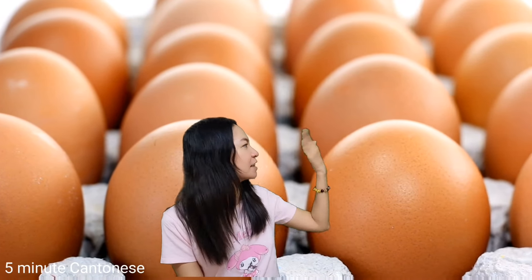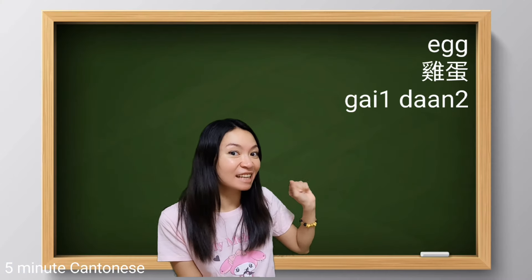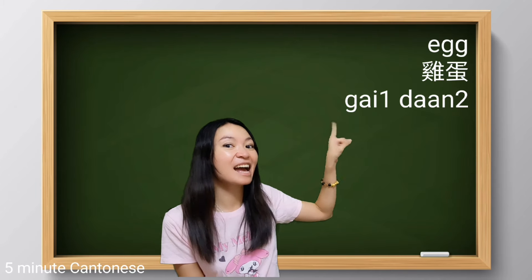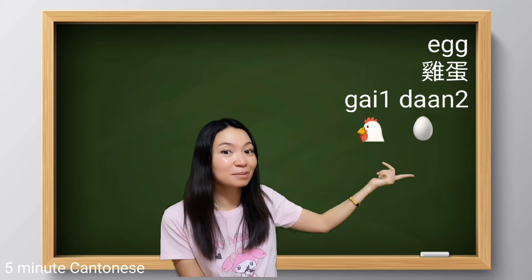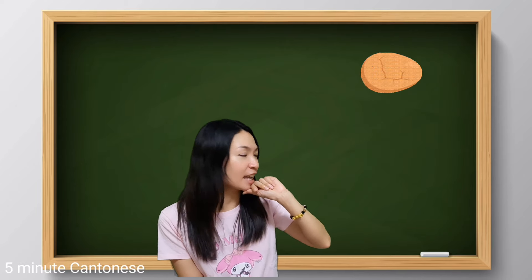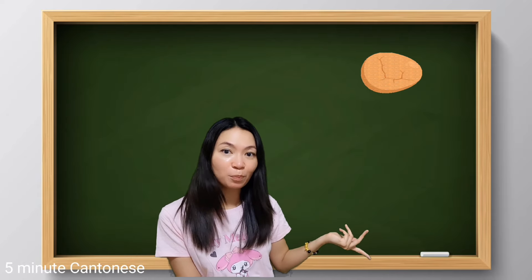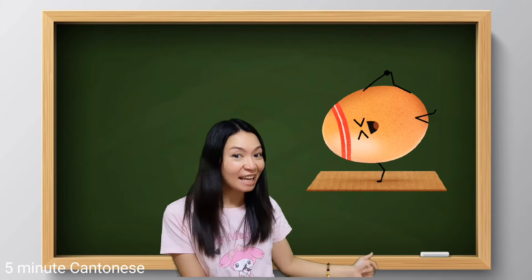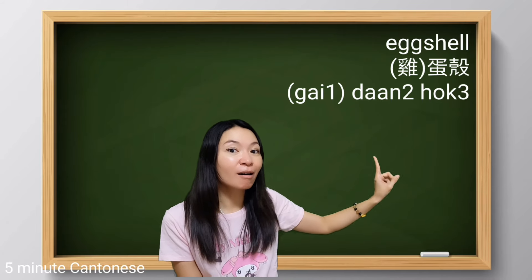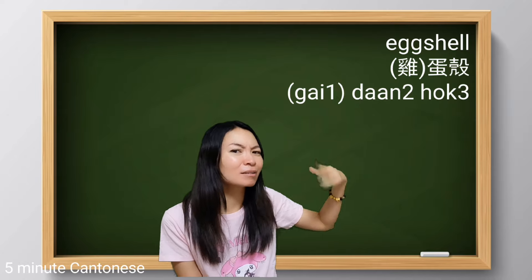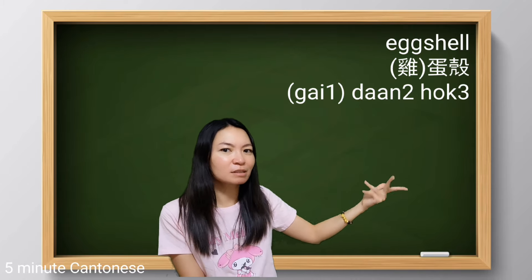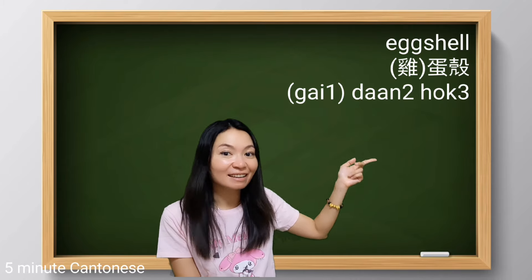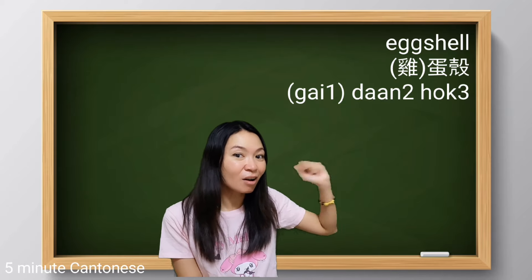First of all, let's take a look at egg. Normally we talk about chicken egg. So for egg in Cantonese, we say 雞蛋. 雞 means chicken, 蛋 means egg. Now let's look at the egg — it consists of several parts. First, the egg shell: 蛋殼. 殼 means shell. If it's a chicken egg, you can also say 雞蛋殼.